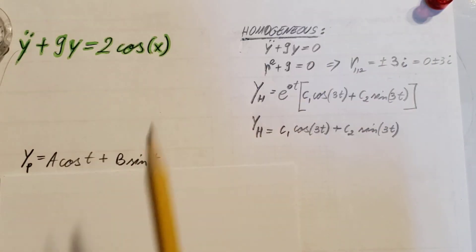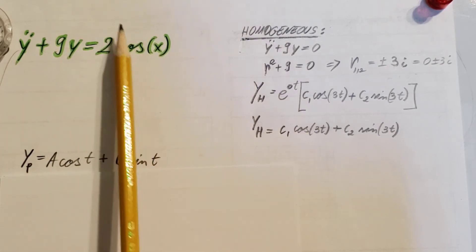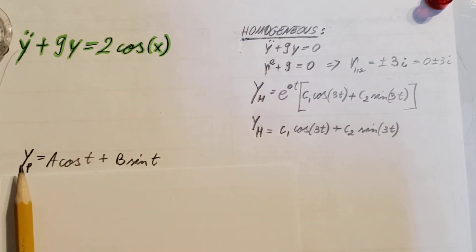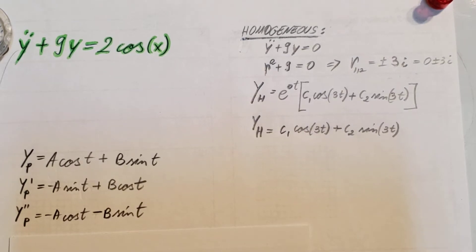My guess for the particular solution will be a cosine t plus b sine t. The undetermined coefficient method is because we have a and b—these are our two undetermined coefficients.